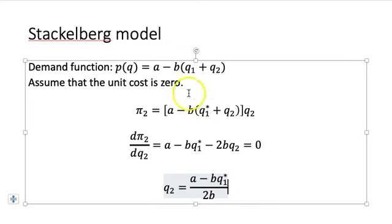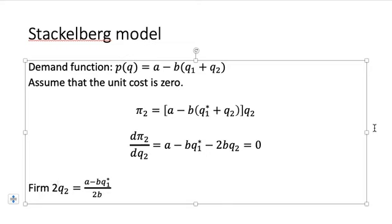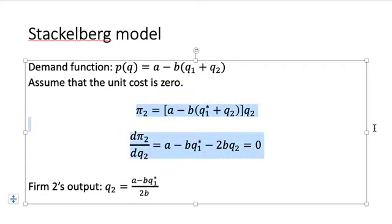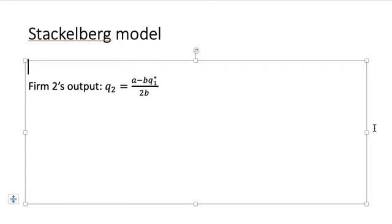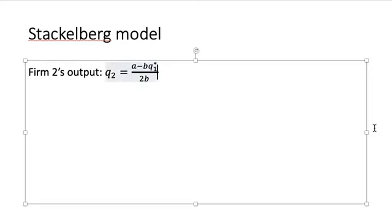Now, from the perspective of the leader - this is firm two's output - the leader will have to factor this in the industry's demand function. So the residual demand function for firm one becomes like this. You have P residual, you still have the concept of the residual demand - whatever price the leader firm will get after taking into consideration firm two's output.